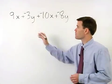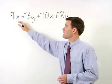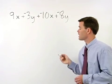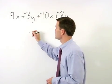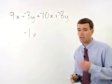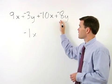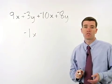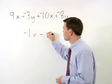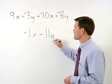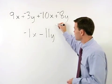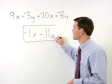Let's start by combining our x terms. 9x plus negative 10x simplifies to negative 1x. Now let's combine our y terms. Negative 3y plus negative 8y simplifies to negative 11y. So our answer is negative 1x minus 11y.